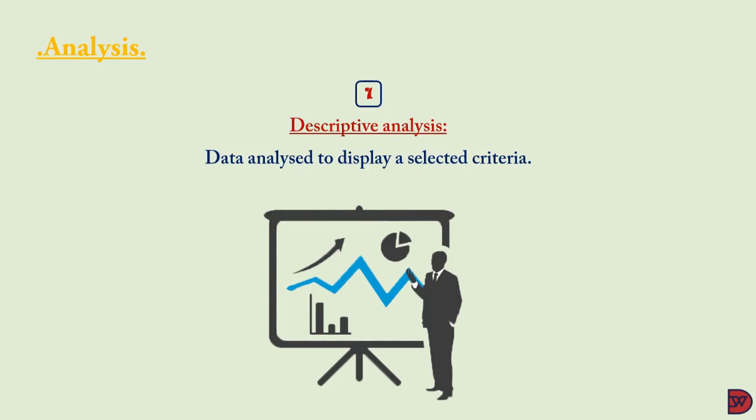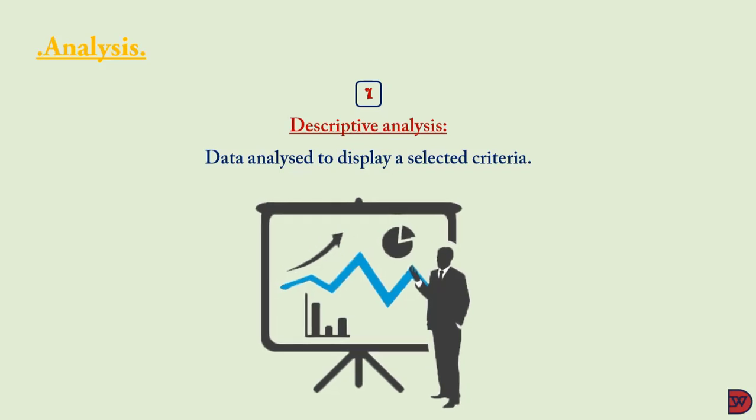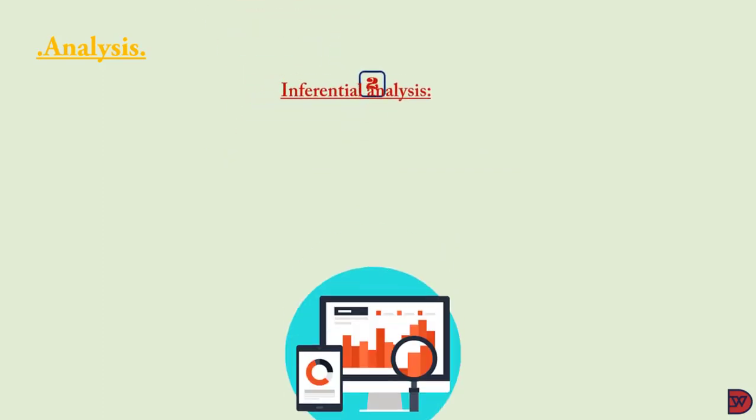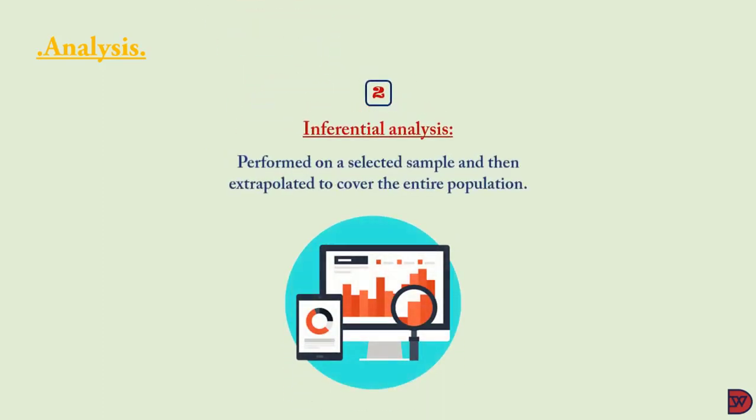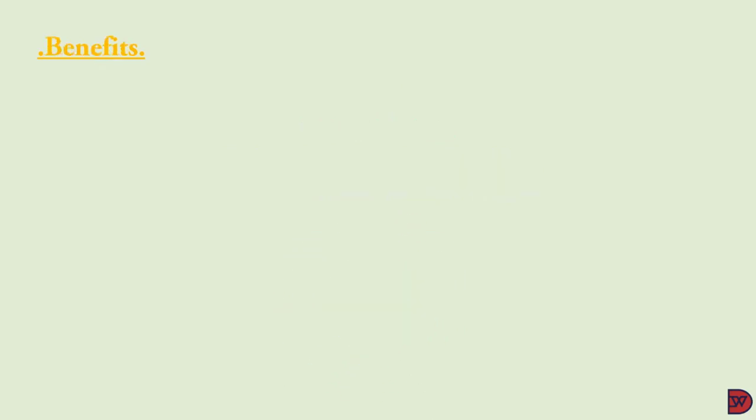The second one is inferential analysis. Here a sample of the big data will be drawn, analyzed, then the information on the pattern will be inferred to the larger population. This might be ideal due to the voluminous nature of the data gotten and maybe the lack of resources to process the entire data to draw out the pattern and describe.